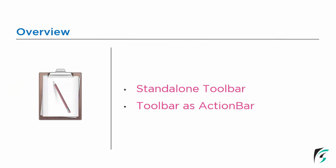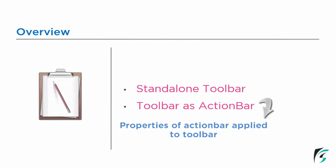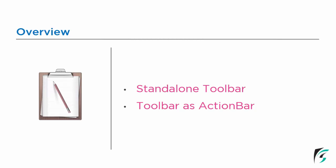We discussed that toolbar is compatible with API level 7 and above. For devices with API version below 21, the material design is not supported, hence we need to use the toolbar as action bar. Whereas for API level 21 and above, toolbar can be used directly. Hence, the toolbar can be categorized into standalone toolbar and toolbar as action bar. When the toolbar is implemented as a standalone toolbar, it can be used as an independent view group — we can define its properties and attributes independently. Whereas when the toolbar is used as action bar, all properties of the action bar are applied to the toolbar via the action bar.